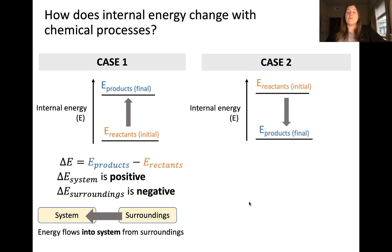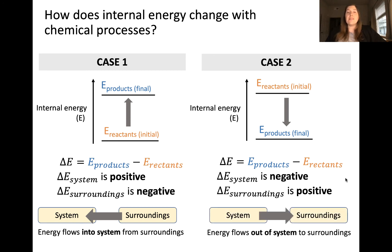If we consider a case where the products have a lower internal energy than the reactants, we'll observe that the change in internal energy of the system is negative, whereas the change in internal energy of the surroundings is positive. This means that energy is being transferred from the system to the surroundings.